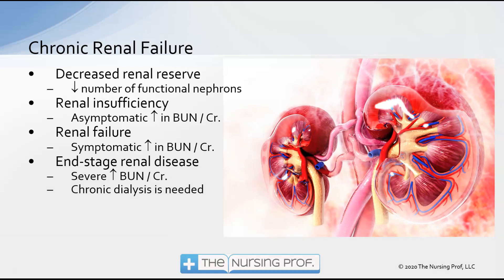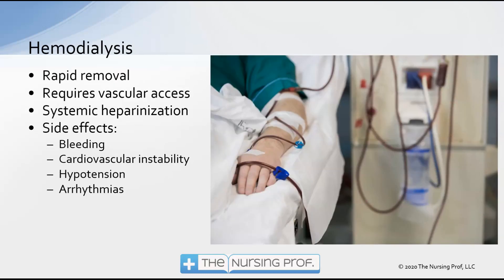In the renal failure stage, we see a symptomatic increase in BUN and creatinine and the patient may need intervention — such as intermittent dialysis or continuous renal replacement therapy (CRRT) in the hospital. When the patient reaches end-stage renal disease, they require chronic hemodialysis. Hemodialysis allows for rapid removal of waste products and fluids but requires vascular access and systemic heparinization. Side effects can include bleeding, cardiovascular instability as electrolytes and fluids shift, hypotension, and dysrhythmias.